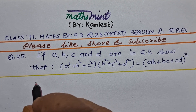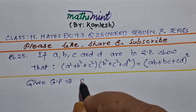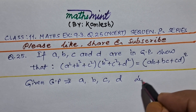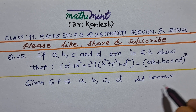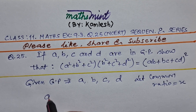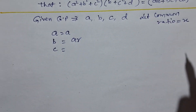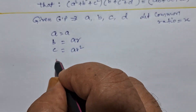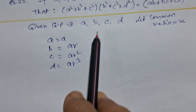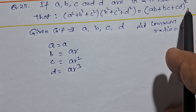Now in the question it is given: the GP is A, B, C, D. Let the common ratio be R. Then the first term A is equal to A, second term B is equal to AR, C will be AR square, and D will be AR cube. We have to show that A square plus B square plus C square, into B square plus C square plus D square, equals AB plus BC plus CD whole square.